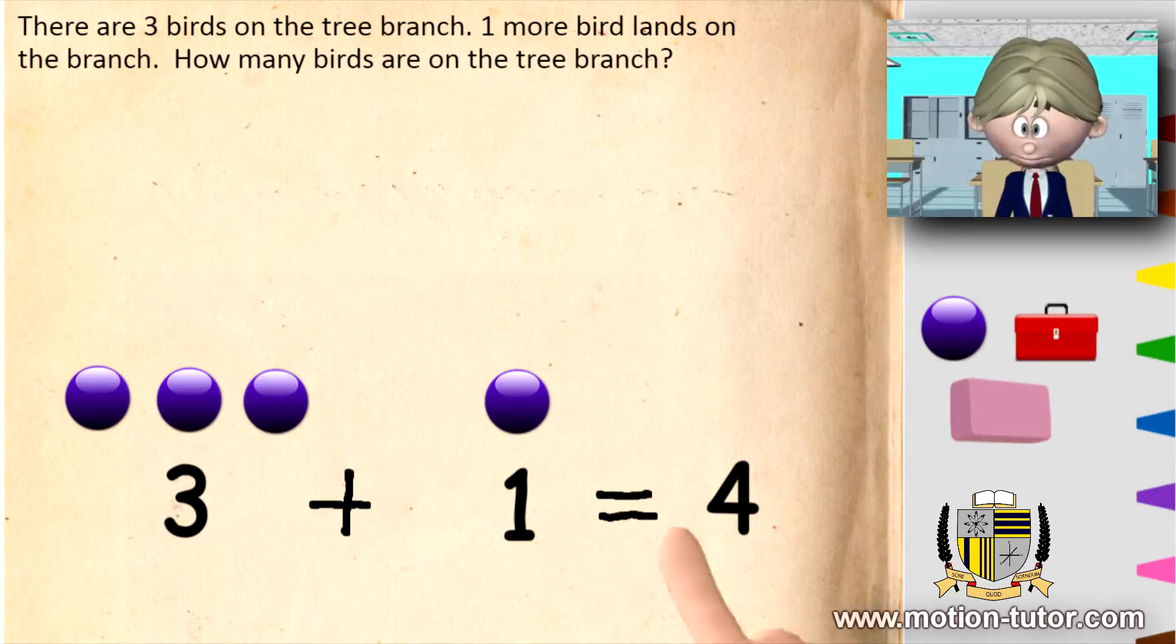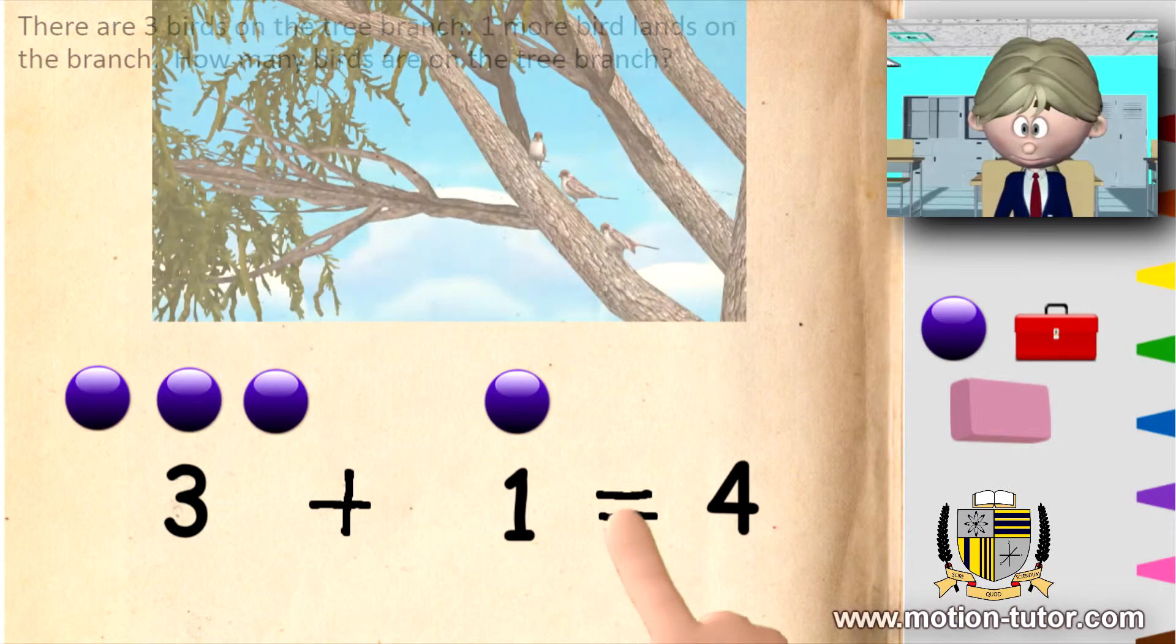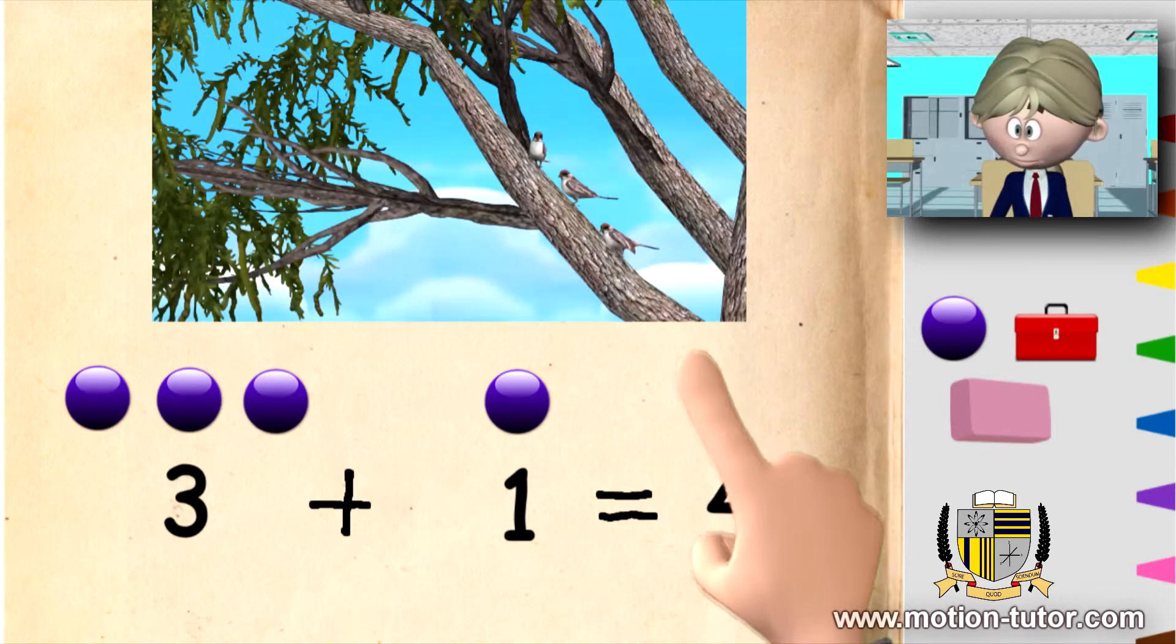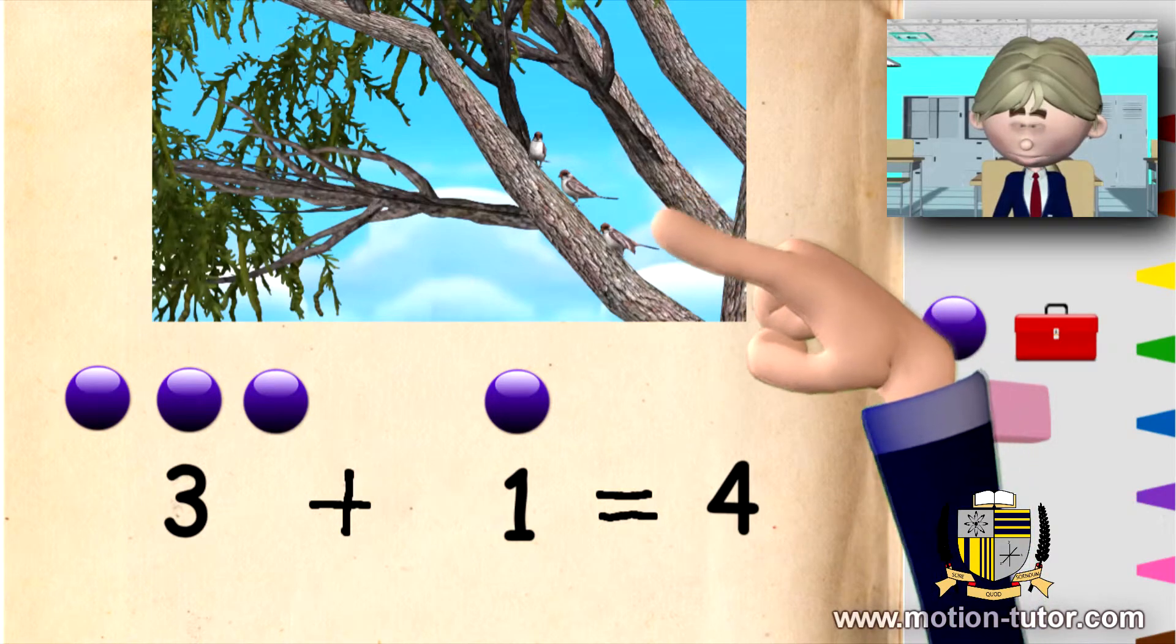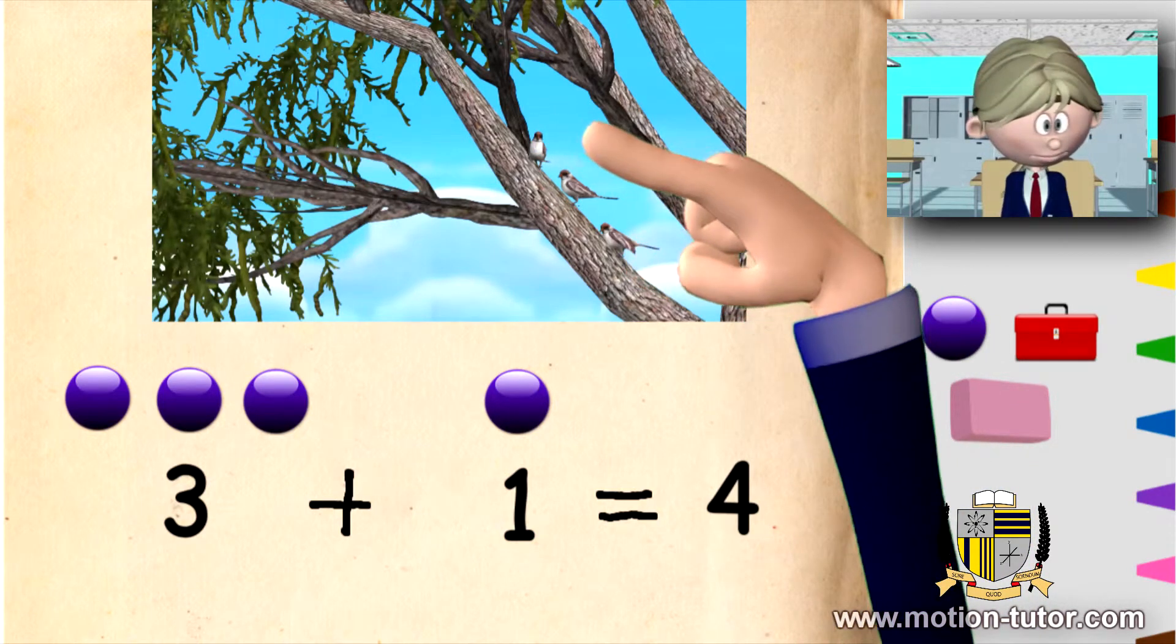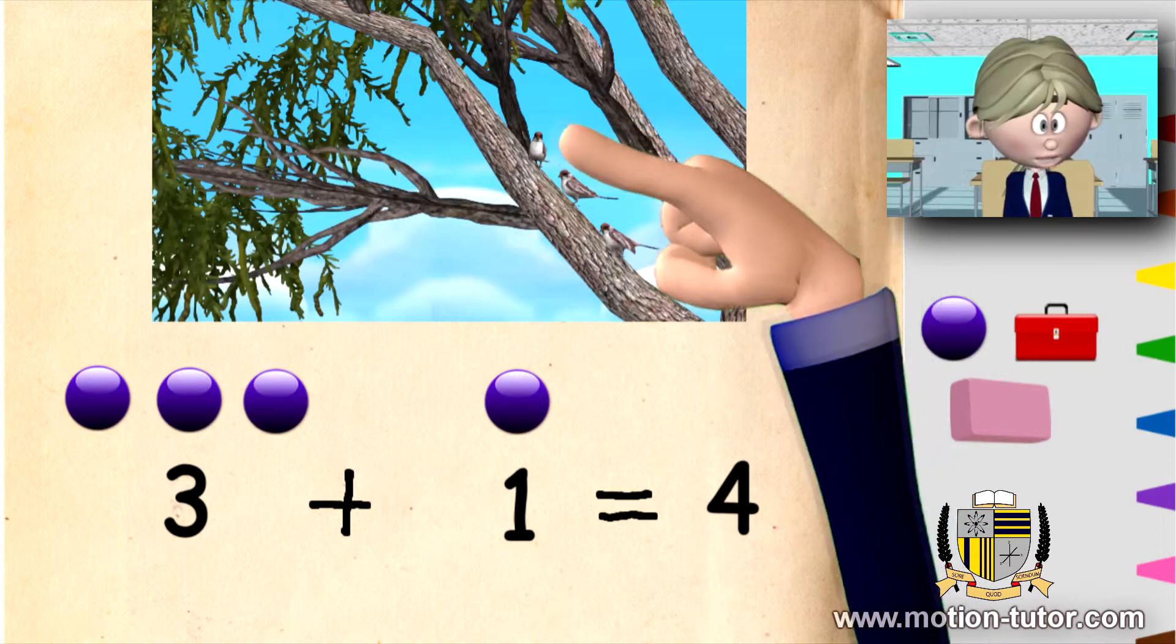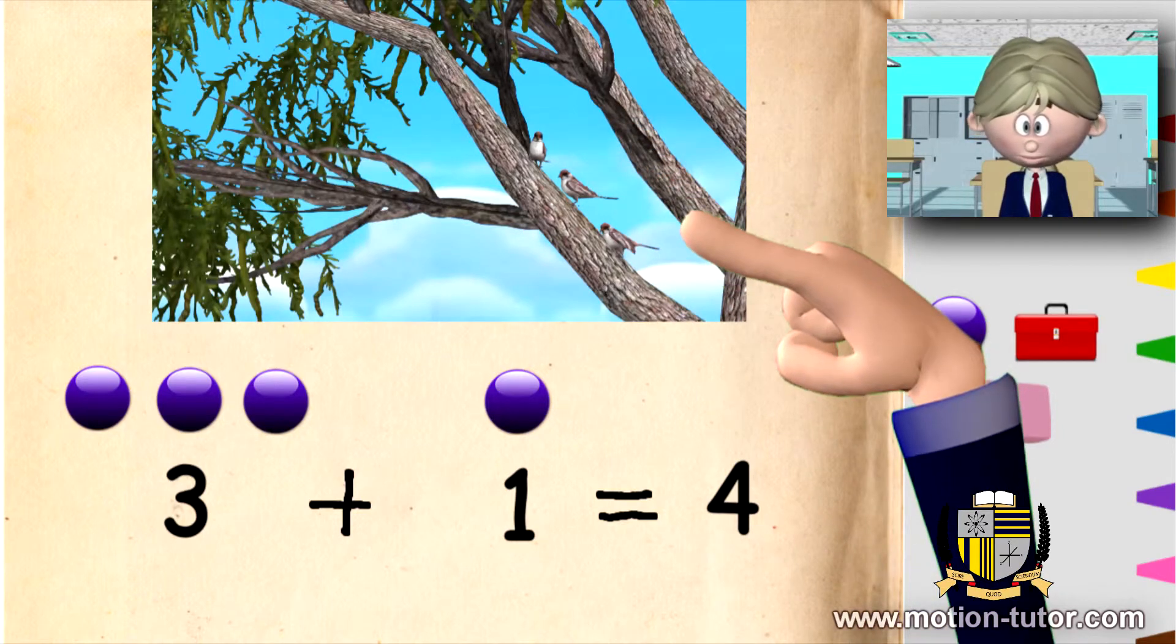Let's take a look at this example. Here we have one, two, three birds. One, two, three. Three birds.